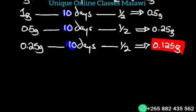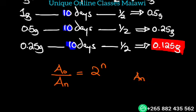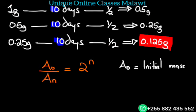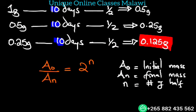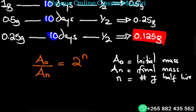There is a formula which we use: A₀ divided by Aₙ is equal to 2ⁿ. Here A₀ is initial mass or initial count rate. Aₙ is the final count rate or final mass. n is the number of half-lives.